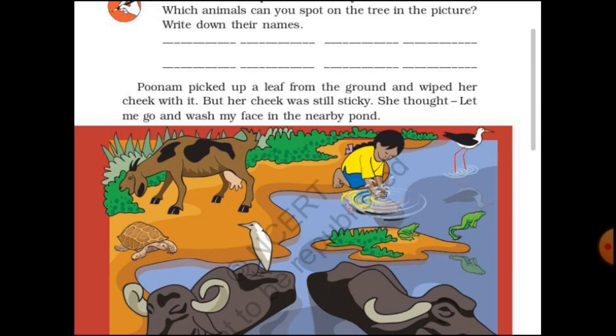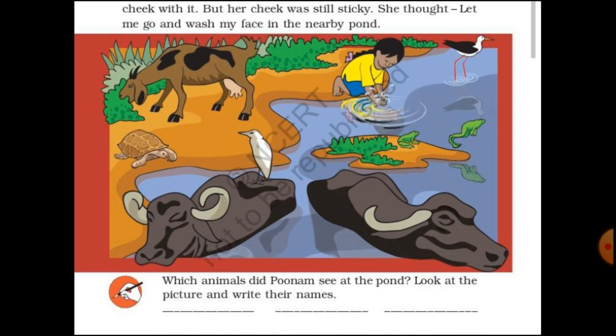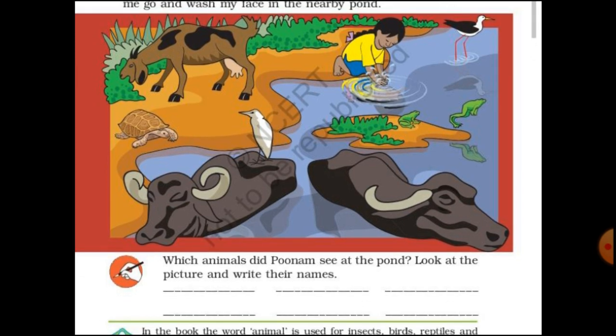Poonam picked up a leaf from the ground and wiped her cheek with it, but her cheek was still sticky. She thought, 'Let me go and wash my face in the nearby pond.' (Urdu: Usne socha ke kyun na main paas ke talaab mein jaoon aur apna muh dhulkar aaoon.)